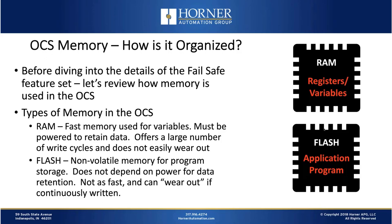The first type is RAM — fast memory typically used for variables or registers that must be powered to retain data. It doesn't wear out due to excessive write cycles, which is important because variables in a running application scanned every few milliseconds could be changing millisecond by millisecond. The second type is flash, which is non-volatile — it does not require power to maintain memory. However, it's not as fast and has the propensity to wear out if continuously written to.